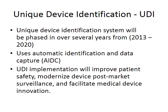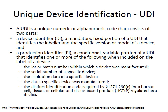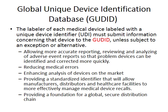UDI implementation will improve patient safety, modernize post-market surveillance, and facilitate medical device innovation, allowing devices to be tracked over their lifecycle. The UDI is a unique numeric or alphanumeric code consisting of two parts: the Device Identifier (DI), a mandatory fixed portion identifying the labeler and specific version or model of the device, and the Production Identifier (PI), a conditional variable that includes the lot or batch number, serial number, expiration date, date of manufacture, or a distinct identification code required for human cell or tissue-based products.